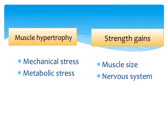The important factors of hypertrophy are mechanical stress and metabolic stress. Mechanical stress is the physical stress on a muscle and metabolic stress is chemical stress in a muscle. On the other hand, the important factors for strength gains are muscle size and nervous system function.